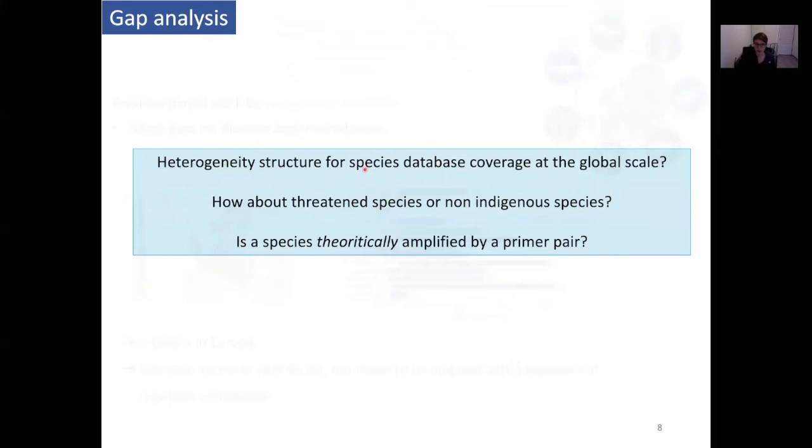Some questions we can ask: at the global scale, how is it structured? Where are the most gaps? Where do we need to sequence a lot? What about threatened species and non-indigenous species? eDNA is a great method to identify this kind of species in the environment, which are hard to sample with other methods. But if we don't have the DNA in the reference databases, we cannot identify them. We need to know where the gaps are so that we can fill them up and scale up DNA analysis. We can also wonder if a species is theoretically amplified by a primer pair, because if it's present in a genetic database, it doesn't mean that your primer pair is able to amplify it.